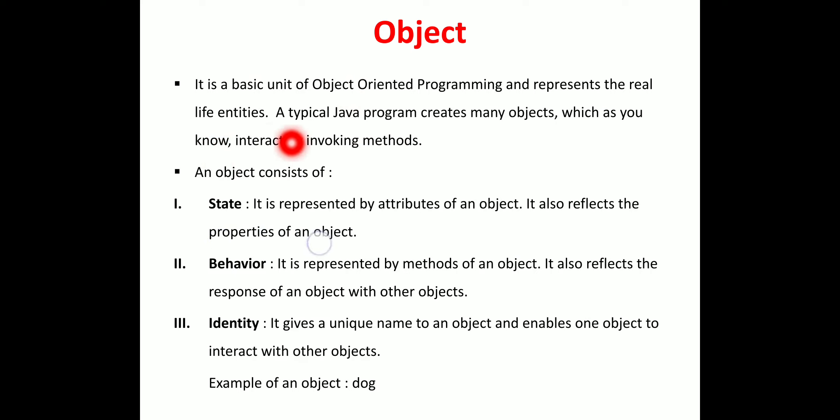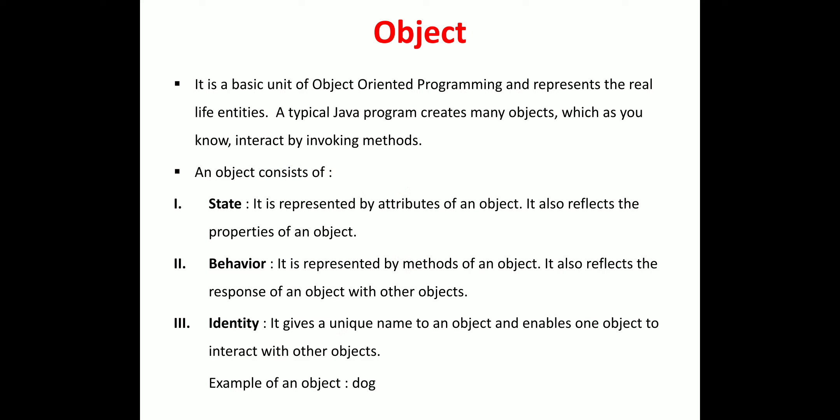A typical Java program creates many objects which interact by invoking methods. Objects are created with the help of the programming you write. You can take a pen, table, or chair as examples of objects. An object consists of the following components.